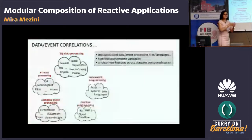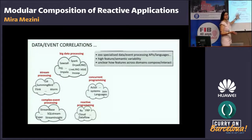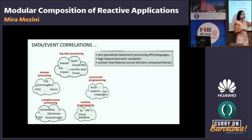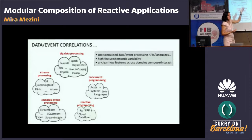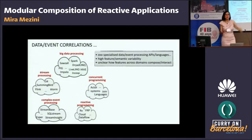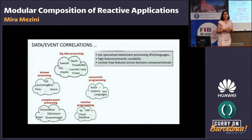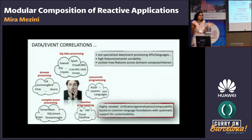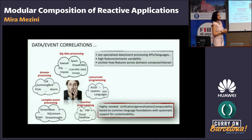What about data and event correlations? Well, there are tons of technology out there — different silos that do correlation in different ways. We have complex event processing systems, stream processing systems, systems that do big data processing, reactive programming, and even concurrent programming languages somehow about correlating events. The thing is we have a rich but high feature and semantic variability. In almost all of those you find joins, but they have different semantics. It's unclear how these variable semantics compose and interact across domains. I think this is too much complexity, and we are in high need for unifying, generalizing, and making those features composable.